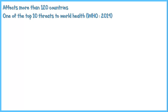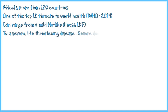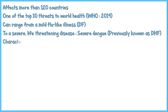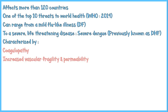Disease spectrum can range from a mild flu-like illness, which is usually seen in classic dengue fever, to a severe, life-threatening disease called severe dengue, previously known as dengue hemorrhagic fever. It is characterized by coagulopathy and increased vascular fragility and permeability. If not closely monitored and managed, it is more likely to progress into hypovolemic shock, known as dengue shock syndrome or DSS.